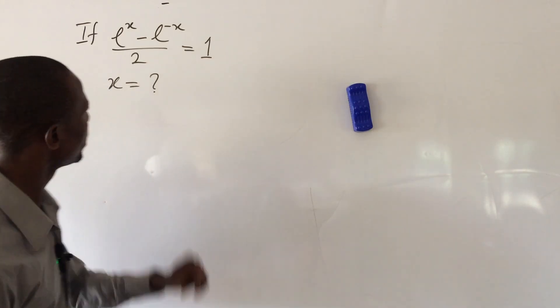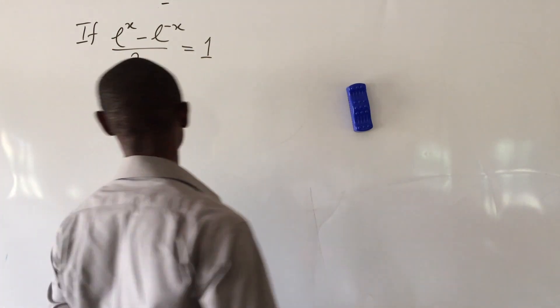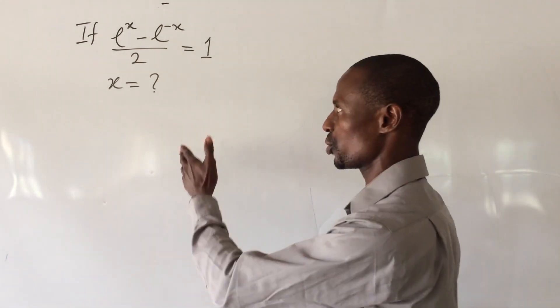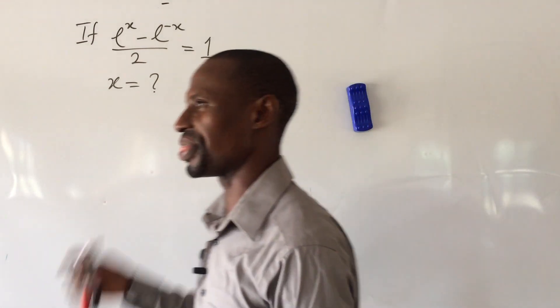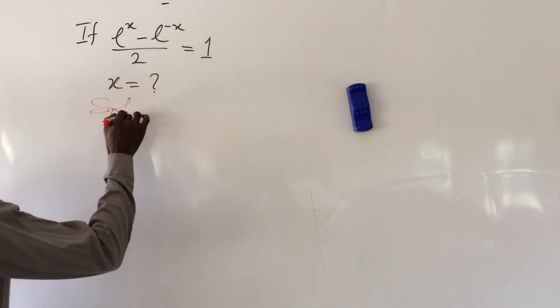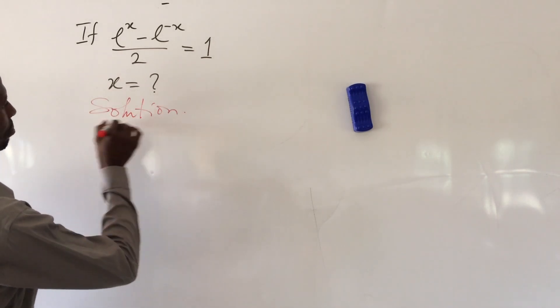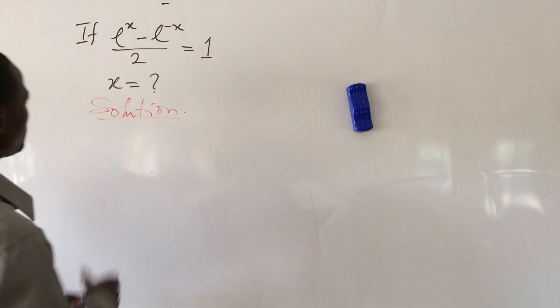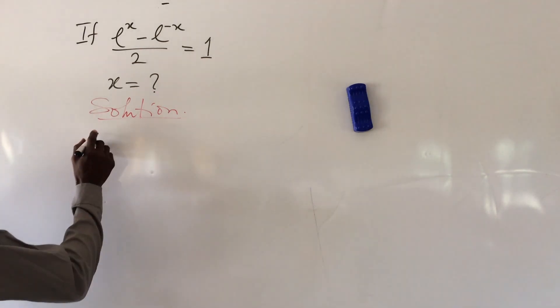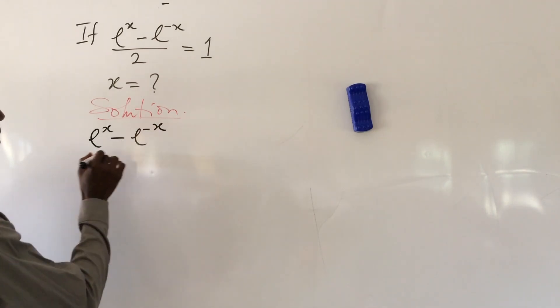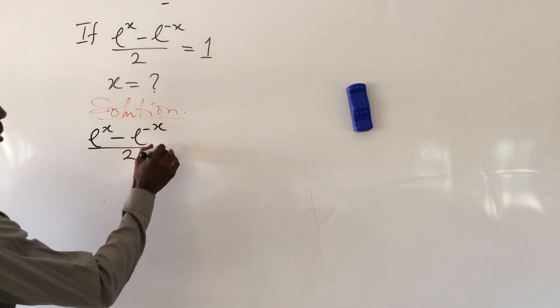The question says if e to the power of x minus e to the power of minus x, all over 2, equals 1, what then would be the value of x? Let's take our solution.